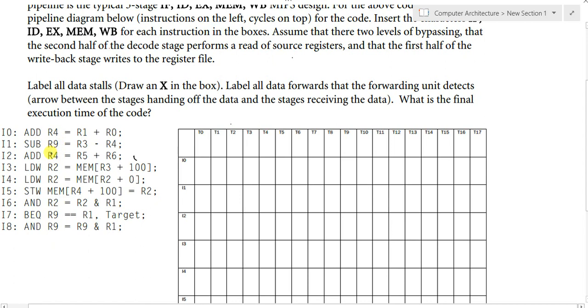So our first step would be detecting the hazards in the code. First instruction, what does it do? It adds R1 to R0 and puts it in register R4. Second instruction takes the value of R4, subtracts it from the value in R3 and puts it in R9. So the value of R4, when will it be available? It will be available after the fifth time slot, after the write back stage. So here we have a data dependency, a true data dependency, that we should have the good value of R4, the correct value of R4 here.